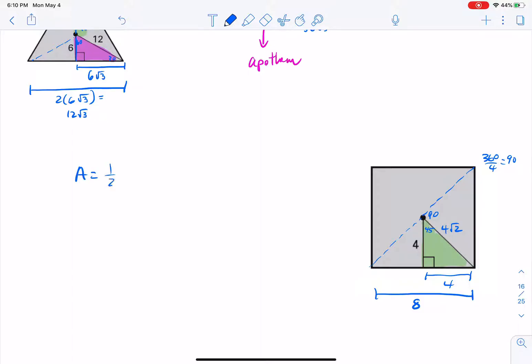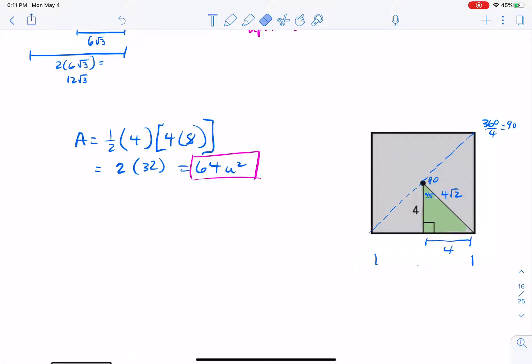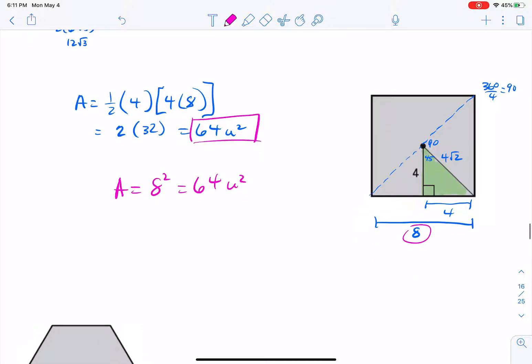So the area here, one half of the apothem length, which was 4, times the perimeter. Well, I've got 4 sides, and each one of those sides is 8. And whenever I go to clean this thing up, I get one half of it. That is 2 times 32, which is 64 units squared. But couldn't we have stopped a long time ago and got 64? Like, we already figured out that the side length is 8. And if I just take that 8 and square it, certainly I get 64 units squared right there. Surely you sure can do that. It's perfectly acceptable.